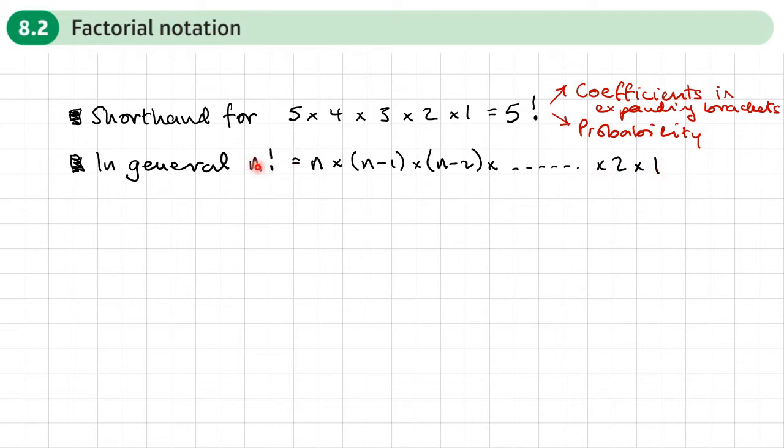So 10 factorial would be 10 times 9 times 8 times 7 times 6 times 5 times 4 times 3 times 2 times 1. So before we move on, just a couple of bits of information. So this little exclamation mark we call factorial and also 0 factorial is equal to 1.